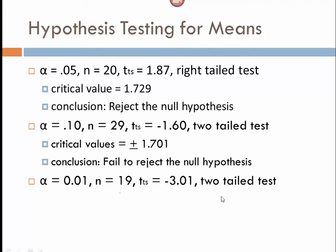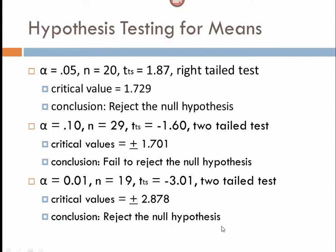Our final example, 0.01, n equal to 19, and our test statistic is negative 3.01. Determine the critical value in this case, or the critical values since this is a two-tailed test. The critical values, if you look on your t-chart, should be 2.878. There's 18 degrees of freedom. You'll notice that your degrees of freedom is always one less than n in all these cases. And our test statistic, in that case, falls into the rejection region, so we reject the null hypothesis.